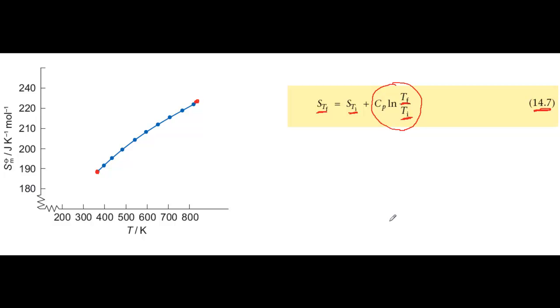This equation is useful, because you can use it to convert the standard entropy at, say, 298 Kelvin, to other temperatures. You can try this in worked example 14.3.